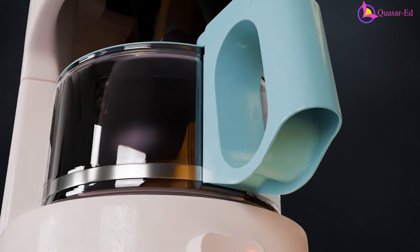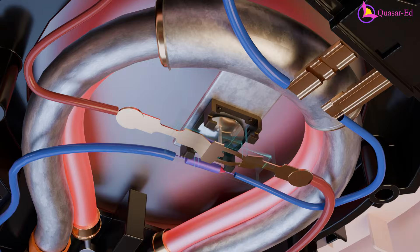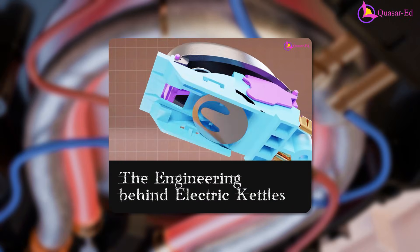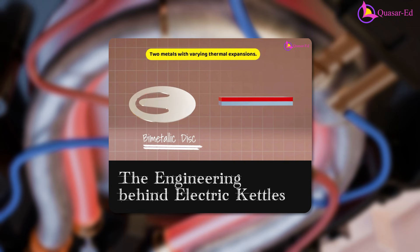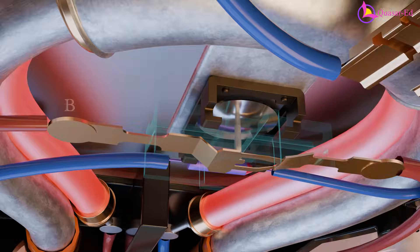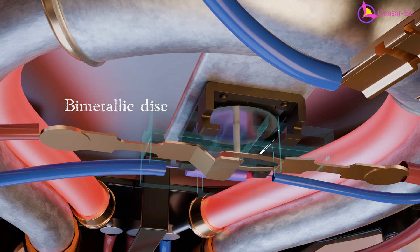The temperature is regulated by a bimetallic strip attached to the heater. If you'd like to learn more about the heating element and bimetallic strip, check out my previous video on electric kettles. When the strip reaches a set temperature, it bends and opens the circuit, stopping the heat.